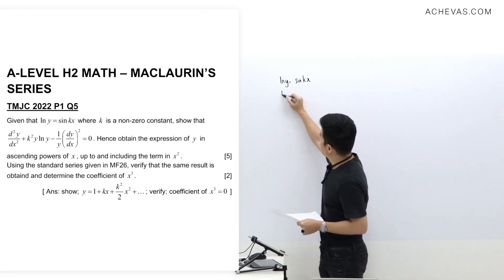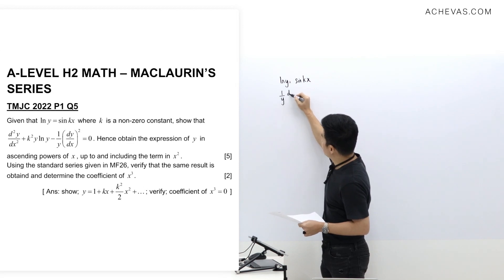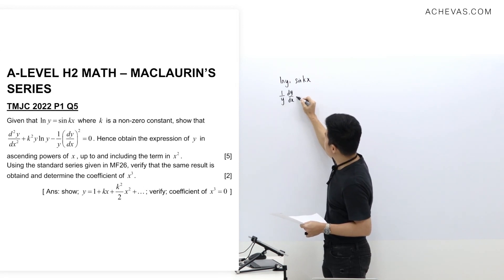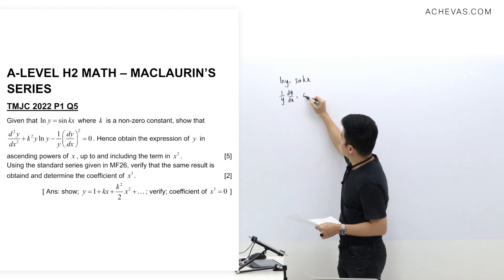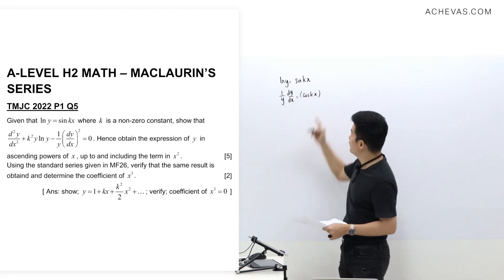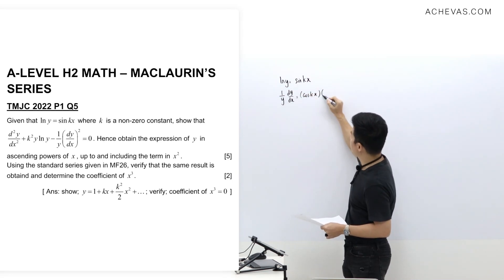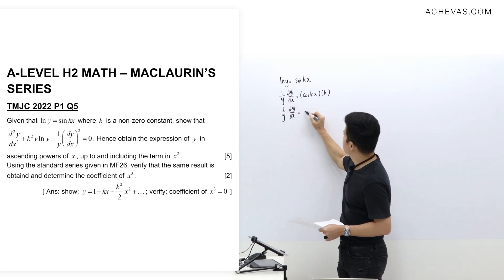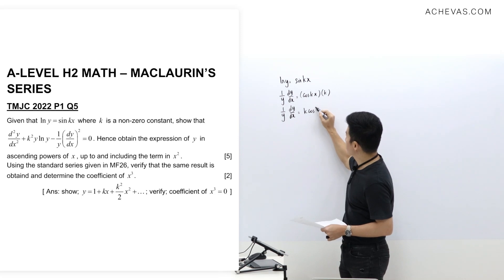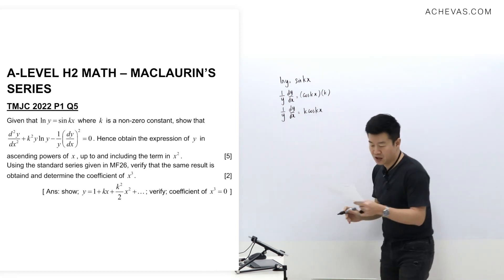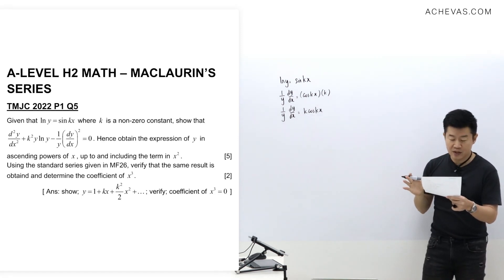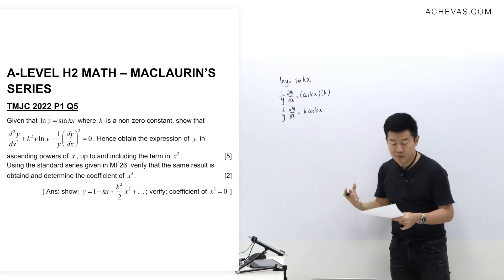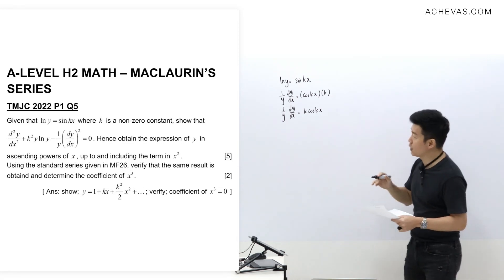Differentiating once, we get 1/y · (dy/dx) via implicit differentiation. This equals cos(kx), and via the chain rule, differentiating kx gives a factor of k. So 1/y · (dy/dx) = k·cos(kx). We will need to differentiate one more time to get d²y/dx².